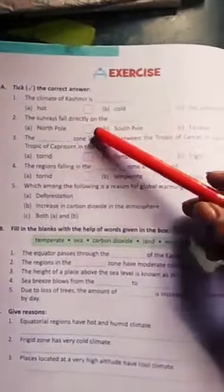The sun rays fall directly on the equator because the equator line is the middle of the earth. The zone located between the Tropic of Cancer in the north and Tropic of Capricorn in the south is the Torrid zone. Torrid zone is the right answer.